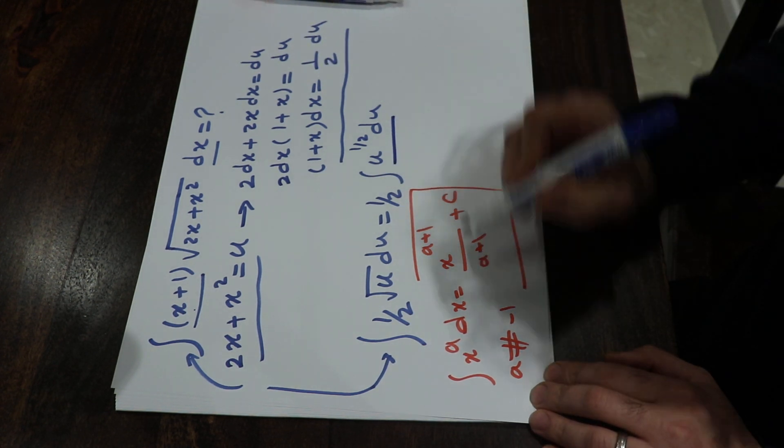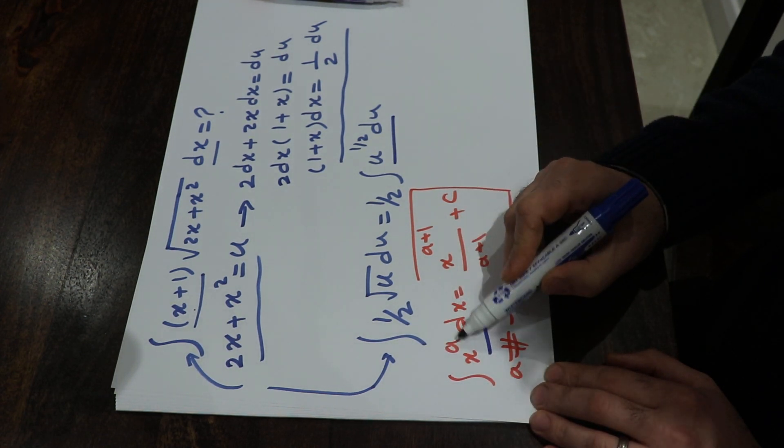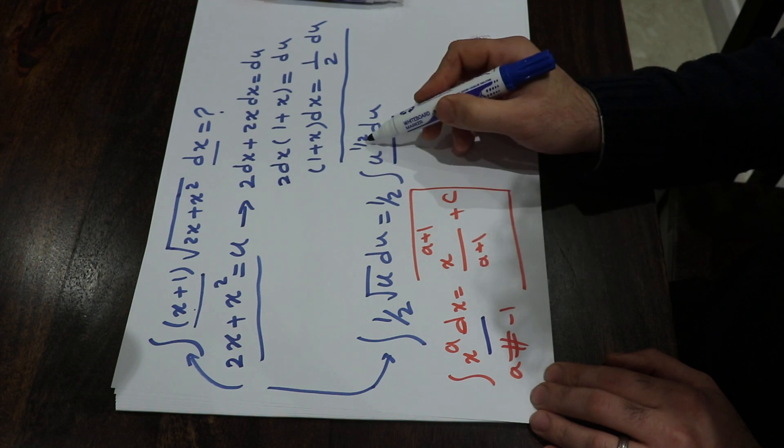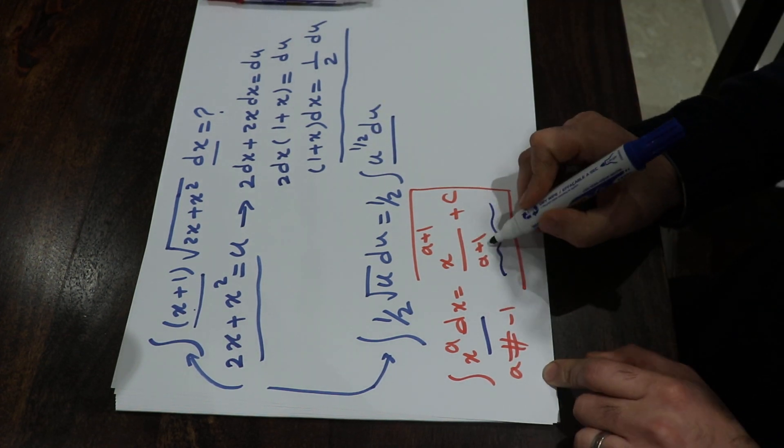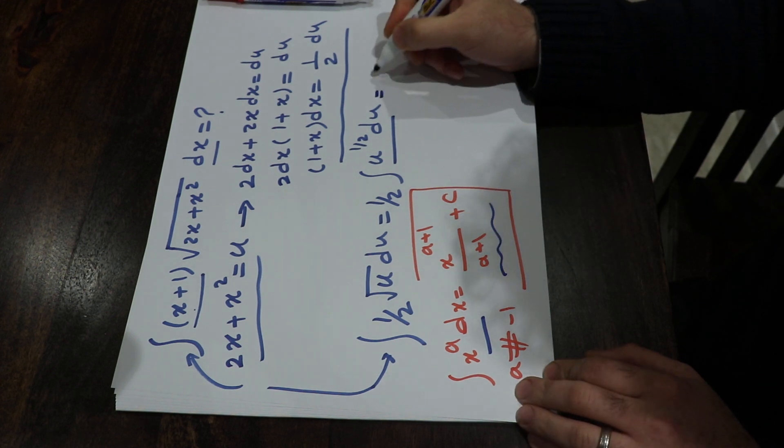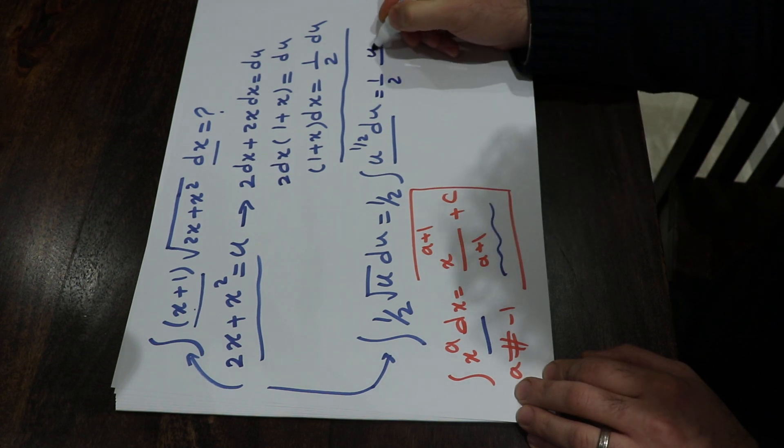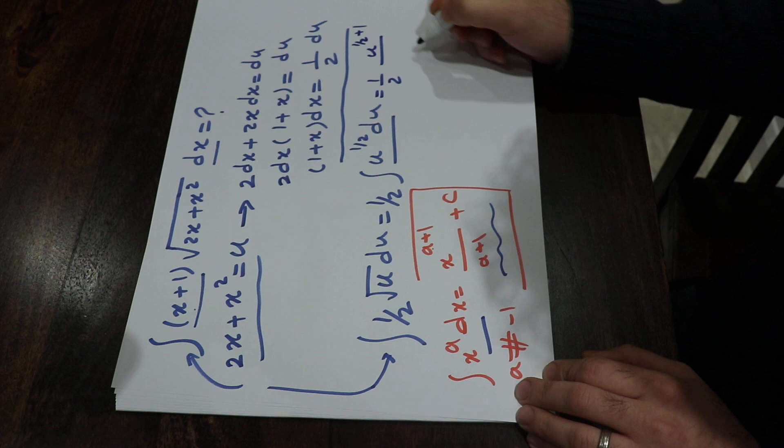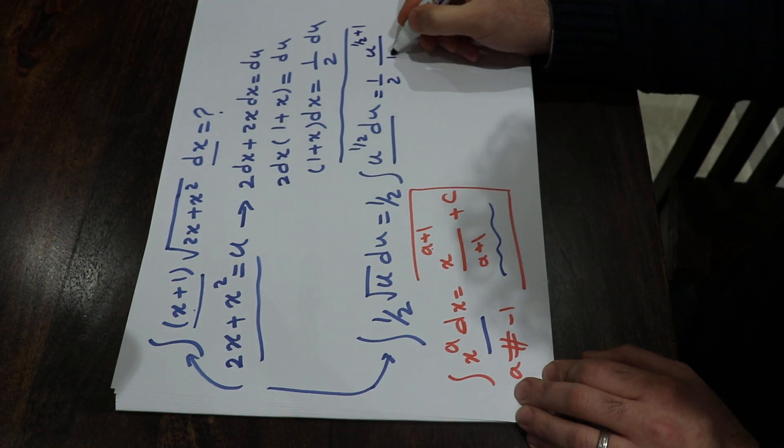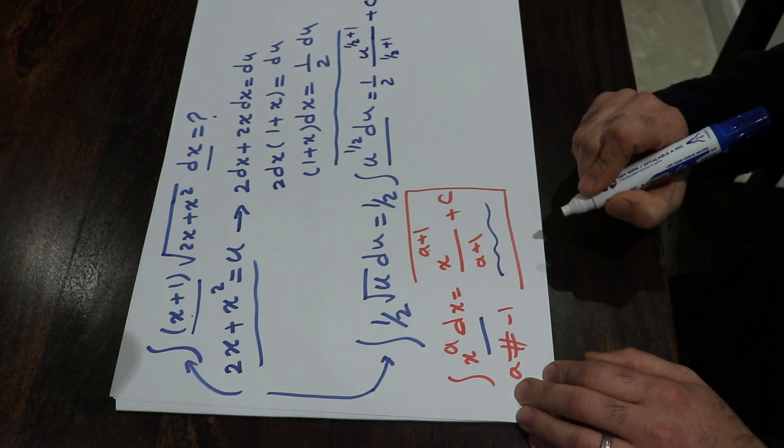So if you compare this integral with this one, you see they have same format and the exponent here, a, is equal to 1 divided by 2. That means I can use this solution to solve my integral, which will be equal to 1 divided by 2 times u with the power of a plus 1. That is 1 divided by 2 plus 1 divided by a plus 1. That is 1 divided by 2 plus 1 plus c. That's the constant of the integral.